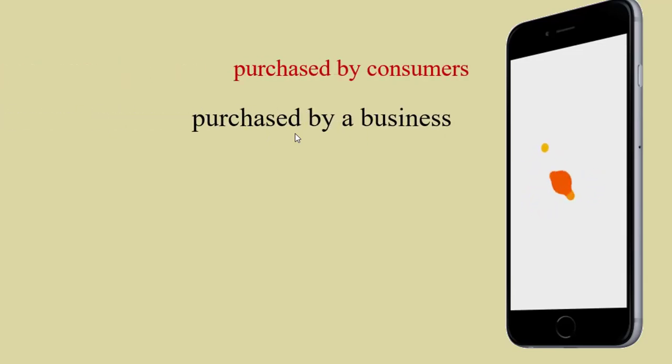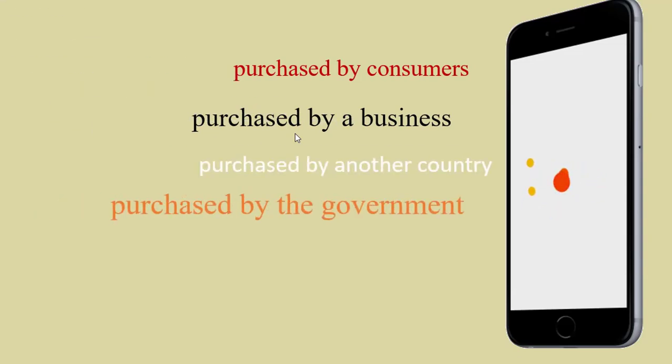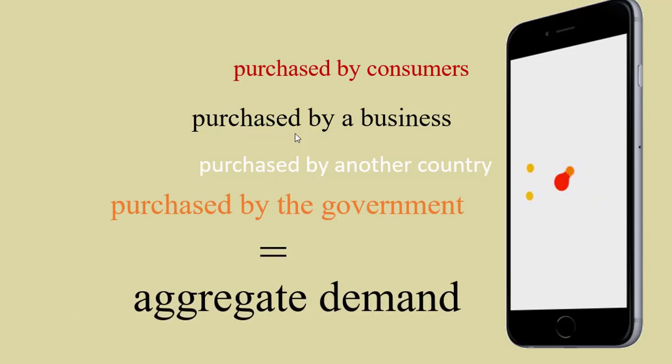Let me explain. The mobile phone I am using can be purchased by only four different entities. It can be purchased by consumers, by a business, by the government, or by another country. So the spending by these groups added all together is aggregate demand.